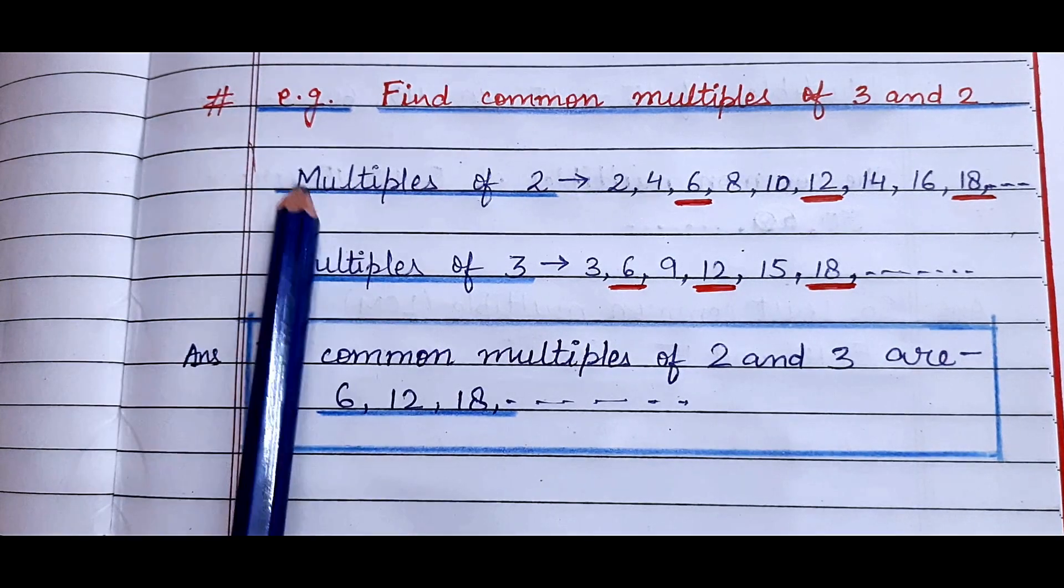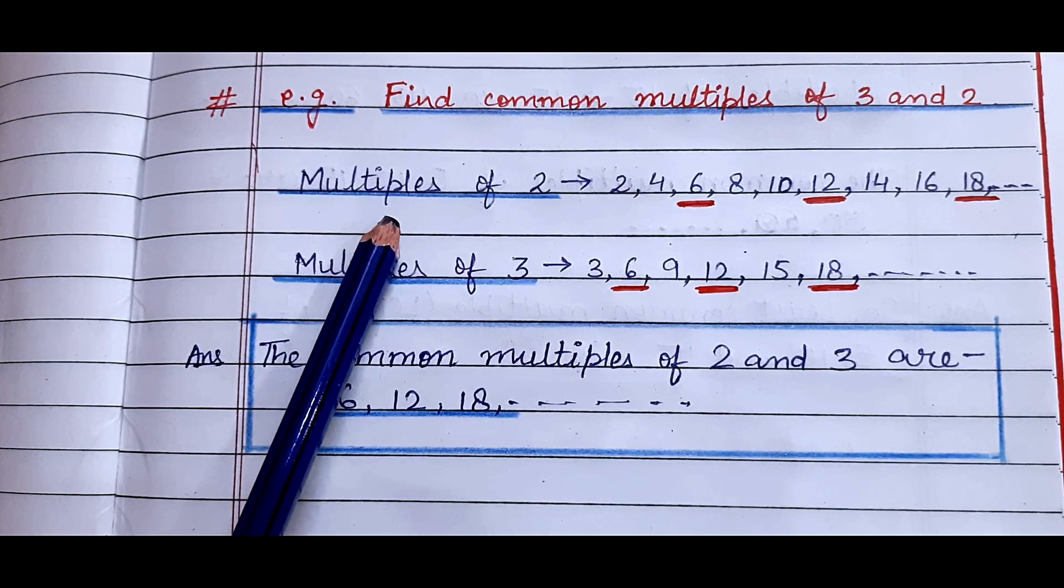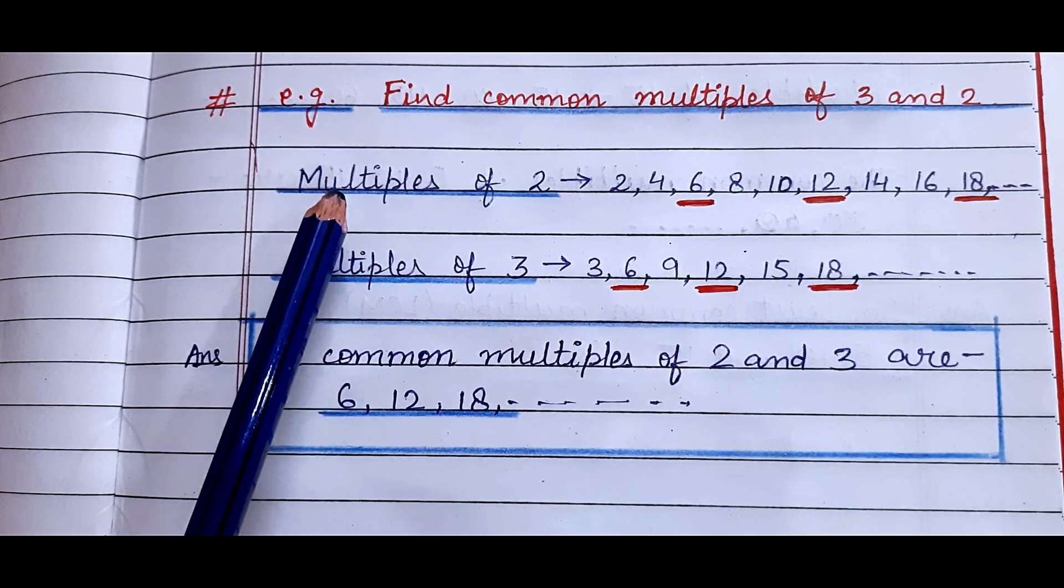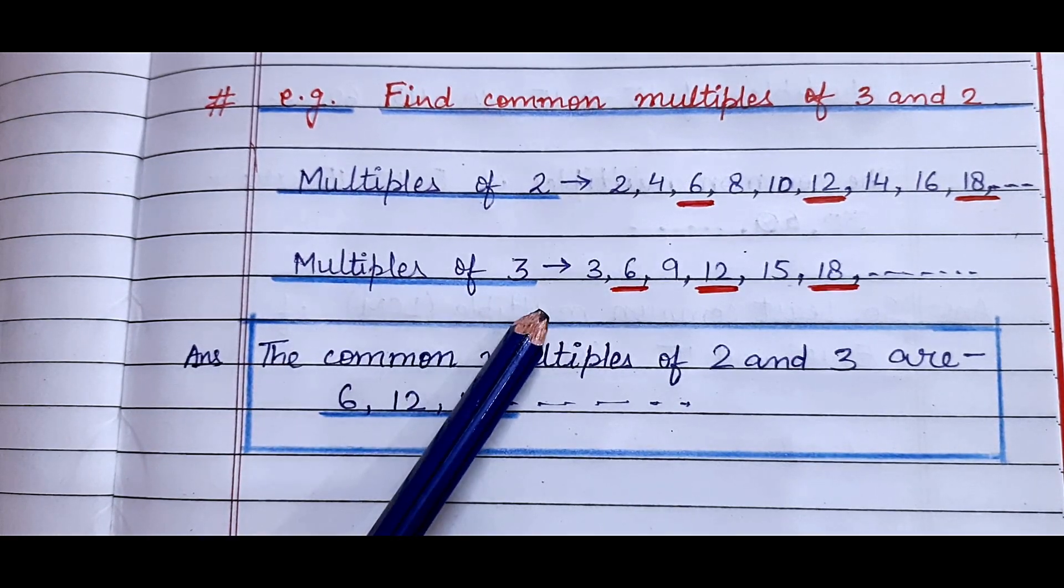See, for finding the common multiples we have to first find out the multiples of each number. For example, first we will find the multiples of 2 and then the multiples of 3.